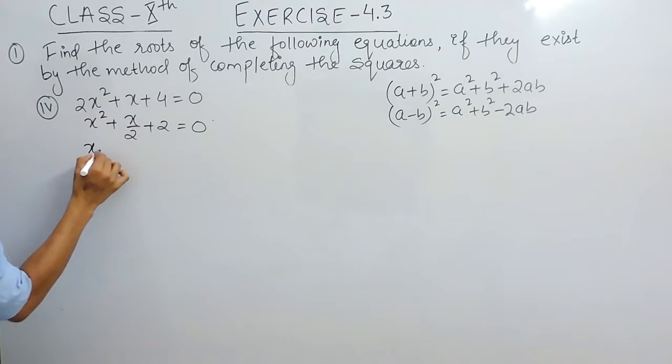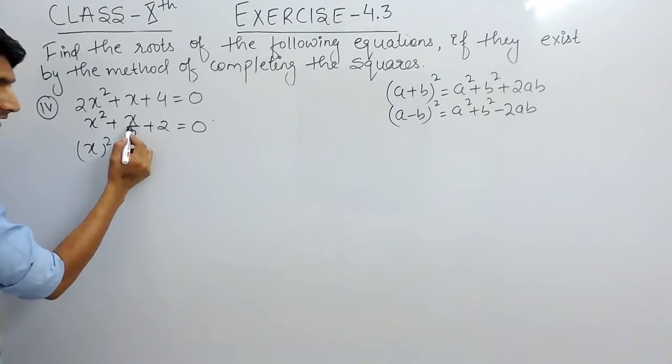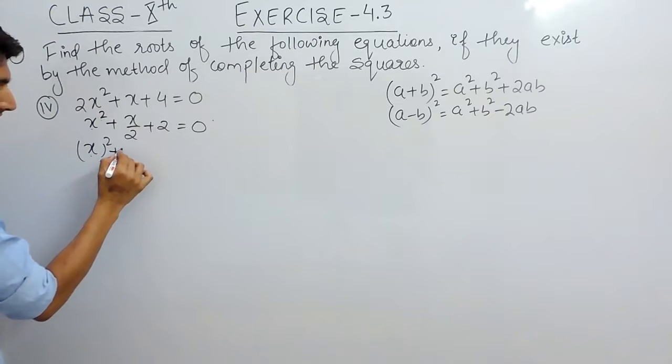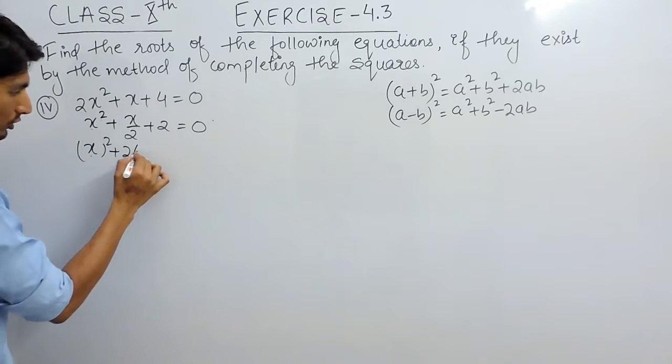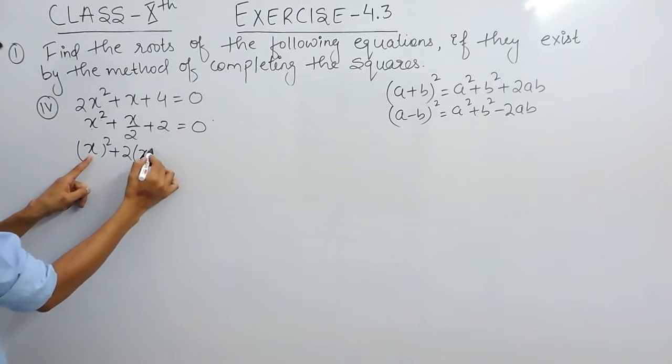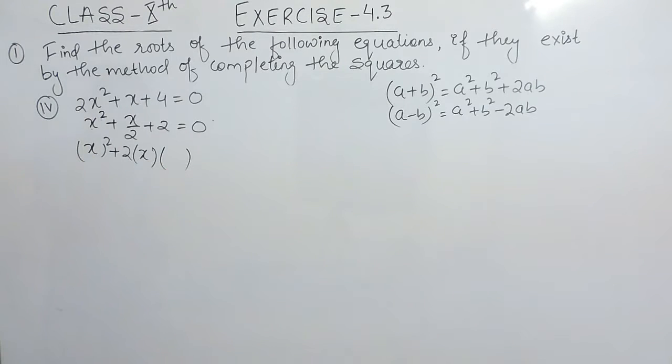So this is basically a square. And you can remember wherever the x square should be a square, and wherever there is only 1x that should be treated as 2 into a into b. And now again we have to write something as b so that the value of this whole term do not change.